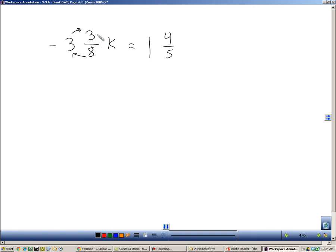8 times 3 is 24, plus 3 is 27, and we put that over 8. So this is really a negative 27 over 8 times k. And this is 5 times 1 is 5, plus 4 is 9, and we put that over 5. So this is really a 9 fifths. Now this is a special step that we can use. Because we're multiplying the k times a fraction, we can multiply this fraction by its reciprocal.